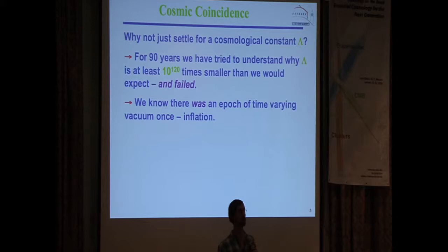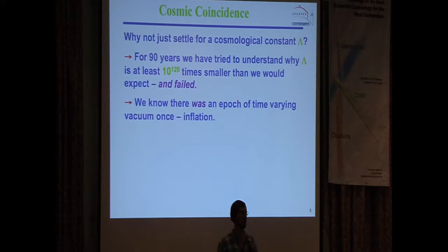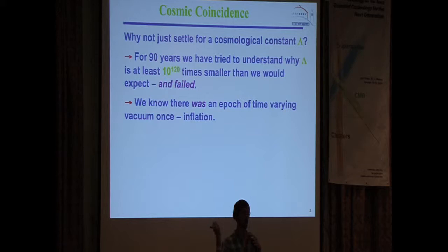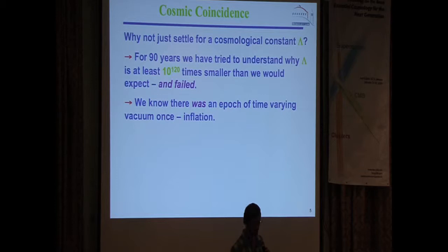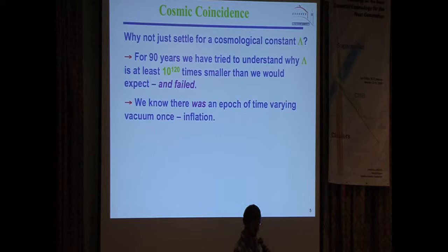A second good reason is that we strongly suspect there was an era of accelerated expansion in the early universe — inflation — sometime between TeV and 10^16 GeV — and we know that ended. The universe we live in today is not a de Sitter space, so that had to have been a time-varying acceleration; it was not a cosmological constant. Even though we know of no scalar fields that actually exist in the universe, we do know there must have been something that looked like a dynamical scalar field in the early universe. Why shouldn't we have that again today? This is a good reason to go well beyond the cosmological constant.